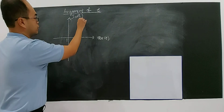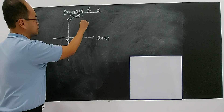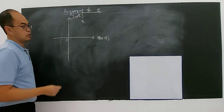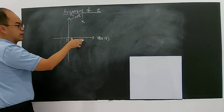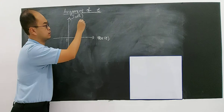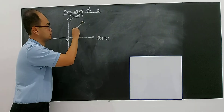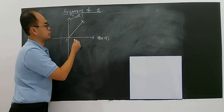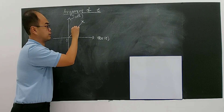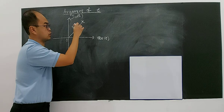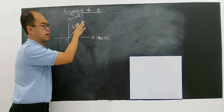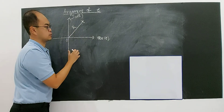Let's say your complex number is in the first quadrant, where the value of X and Y is positive. This is your modulus — the length — so the modulus.